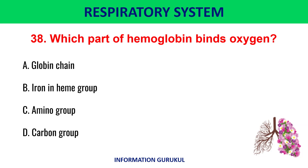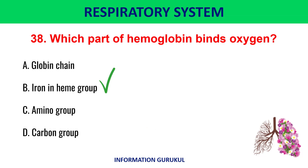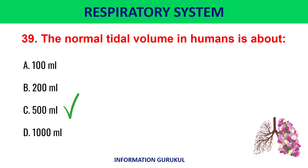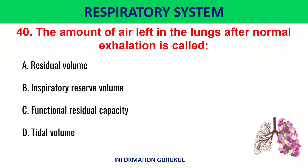Which part of hemoglobin binds oxygen? The iron in the heme group. The normal tidal volume in humans is about 500 milliliters. The amount of air left in the lungs after normal exhalation is called functional residual capacity.